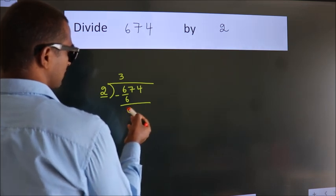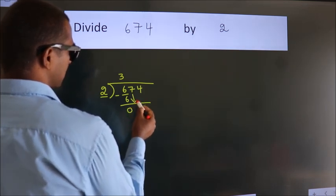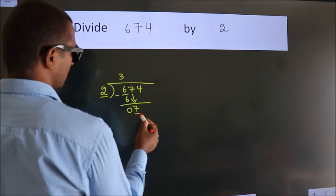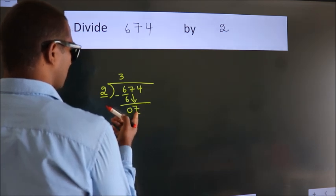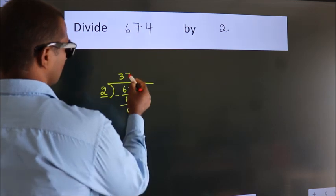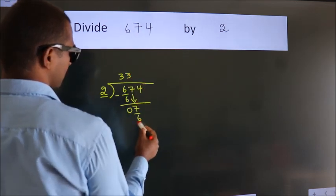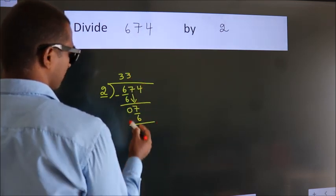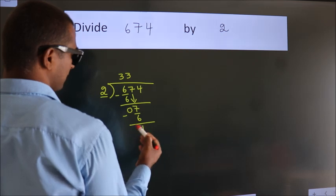After this, bring down the beside number. So 7 down. A number close to 7 in the 2 table is 2 times 3, which is 6. Now we subtract and we get 1.